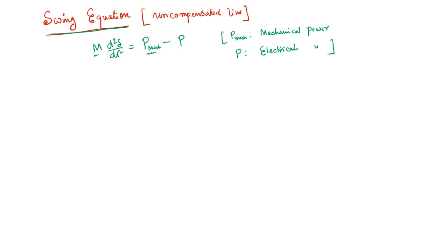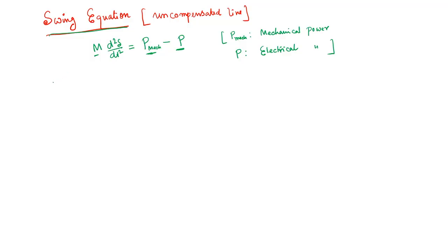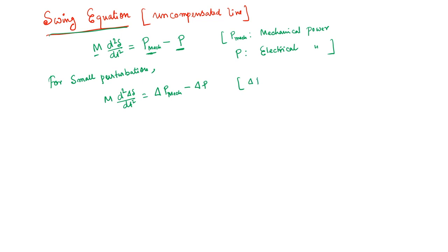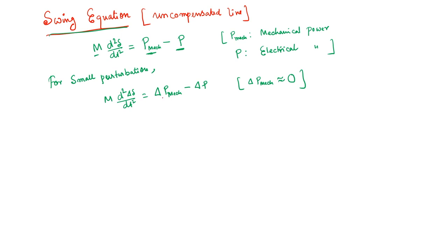For a stable operating condition, P_mech equals P_electrical, so there is no rate of change of delta. Taking a small perturbation around the stable operating point, the equation becomes M·(d²Δδ/dt²) = ΔP_mech − ΔP. Since mechanical power cannot change instantaneously, ΔP_mech ≈ 0. So the equation simplifies to M·(d²Δδ/dt²) + ΔP = 0.